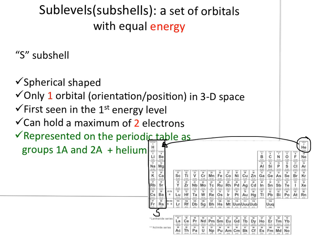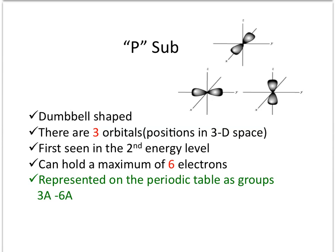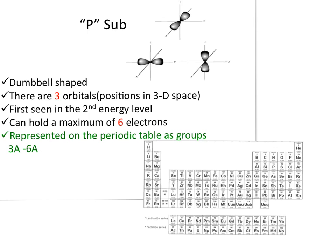The next sub-level is the P sub-shell. It is dumbbell-shaped, with three orbitals, each holding two electrons, giving the P sub-level a maximum of six electrons. On your periodic table, draw a box around all of the Group A columns from 3A through 8A, minus helium. This gives you the P sub-shells when using the periodic table as a tool for electron configuration.